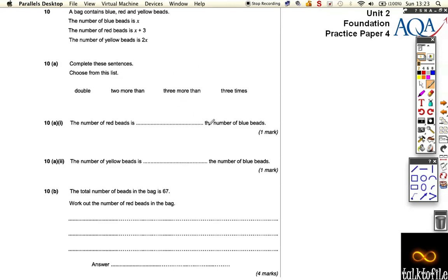But you have to check to understand what's going on. So we've got the number of blue beads is x, the number of red beads, so blue is equal to x, red is equal to x plus 3, and the number of yellow beads is equal to 2x, twice the number of blue ones.